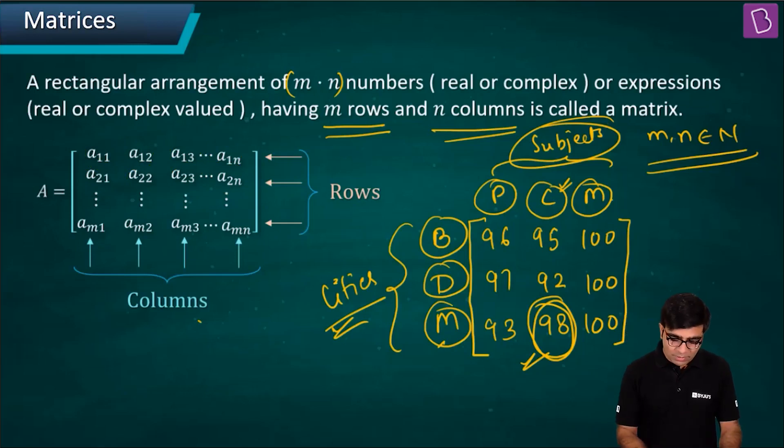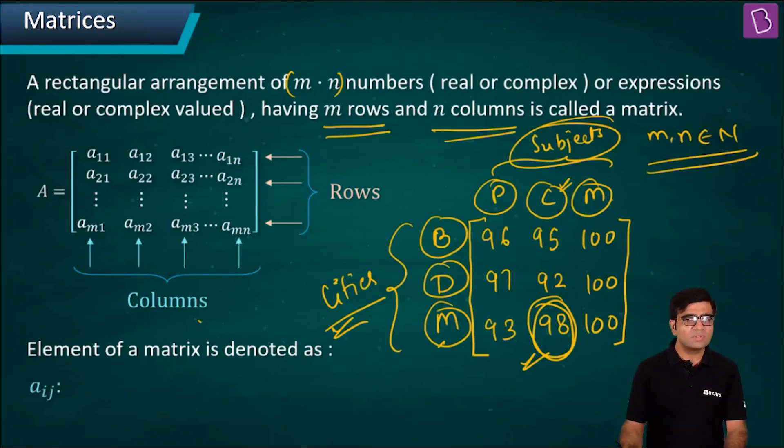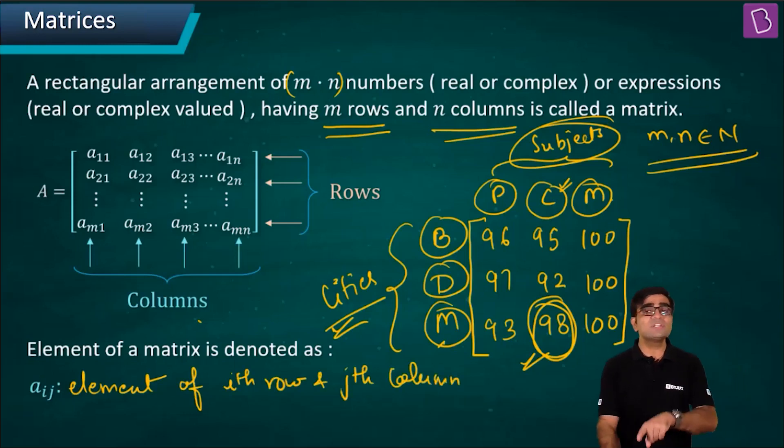If I talk about the particular representation of a general element of this matrix, any element can be denoted as aij. What does it mean? aij is the element of ith row and jth column. This is the element of ith row and jth column.